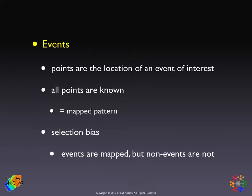In other words, there are no missing events, no missing values. This implies that there is a certain form of selection bias, in that we only map the events — we don't map what we call the non-events. You have a map of car accidents on a road network, but you don't have locations of where accidents might have happened but they didn't happen. Similarly, we don't have locations where people could have become sick but they did not. We only see the ones, so to speak, and we don't observe the zeros. That's important to keep in mind.